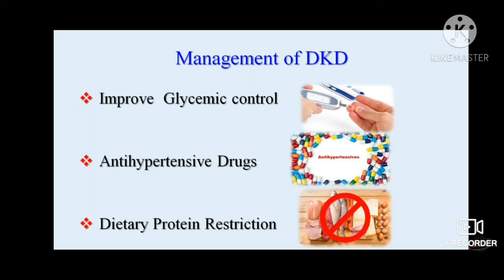To summarize the OHA approach: rely first on metformin; at creatinine 1.5 mg/dL stop metformin; if eGFR is 44–59 reduce metformin dose and add gliclazide, glipizide, or glimepiride; next add pioglitazone; then SGLT2 inhibitors; then GLP-1 agonists; then DPP-4 inhibitors.